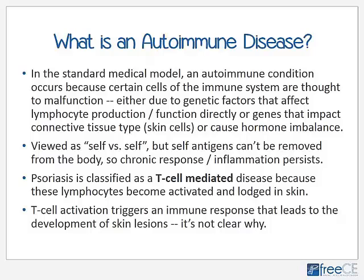According to the National Psoriasis Foundation, psoriasis is the most common autoimmune disorder in the United States, affecting up to 7.5 million people. In the standard medical model, an autoimmune condition occurs because certain cells of the immune system — leukocytes or lymphocytes — are thought to malfunction, either due to genetic factors affecting lymphocyte production and function, or genes impacting connective tissue. These genetic issues can also cause hormone imbalance, and autoimmune disease is classically viewed as a self-versus-self battle where self-antigens cannot be removed, so chronic inflammation persists.